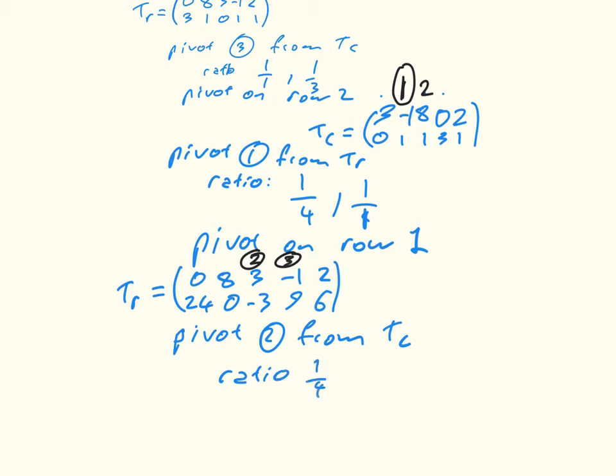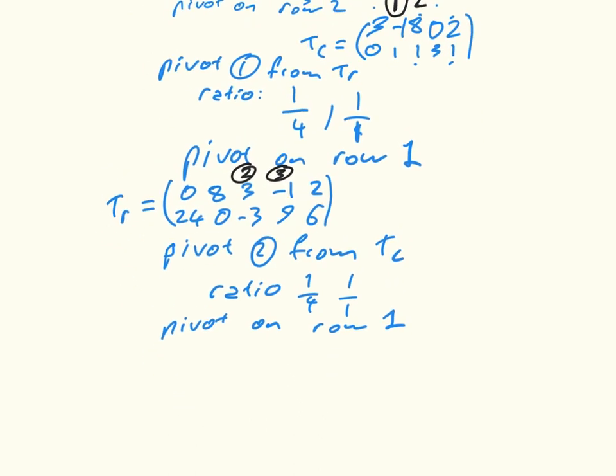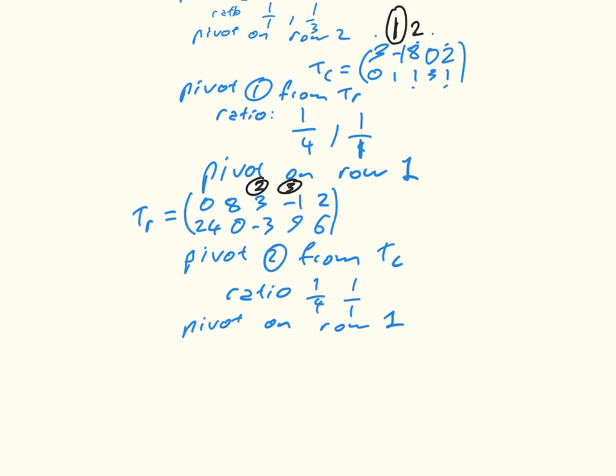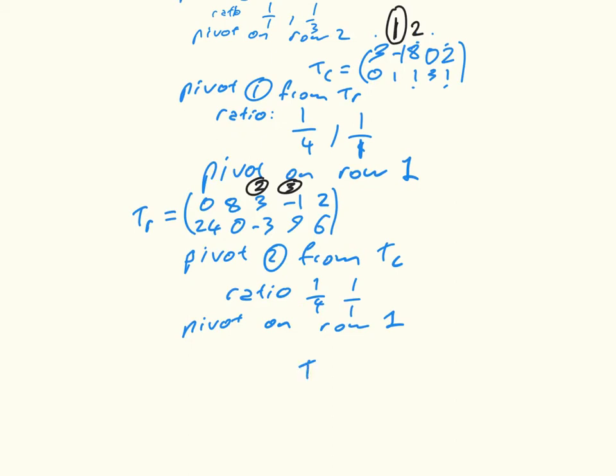So I pivot on row 1. Let me keep it in shot there. And so I get that Tc. I'm pivoting on row 1, so row 1 stays the same: 3, minus 1, 8, 0, 2. I'm going to multiply that second row by 8. And I get minus 3, 9, 0, 24, and 6.